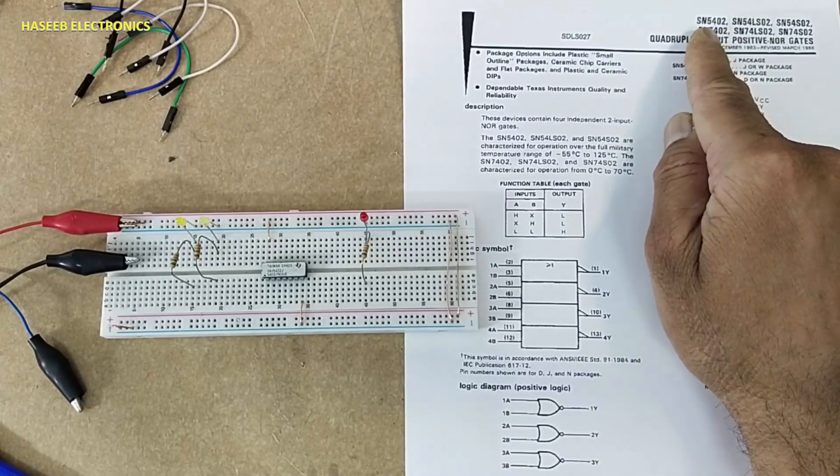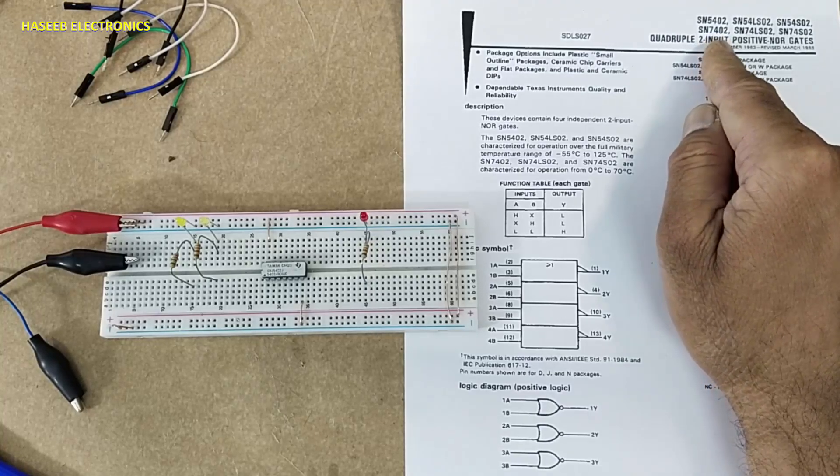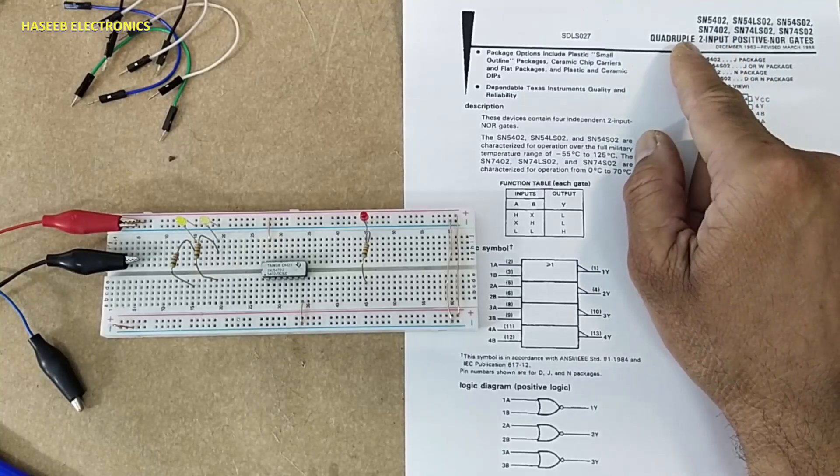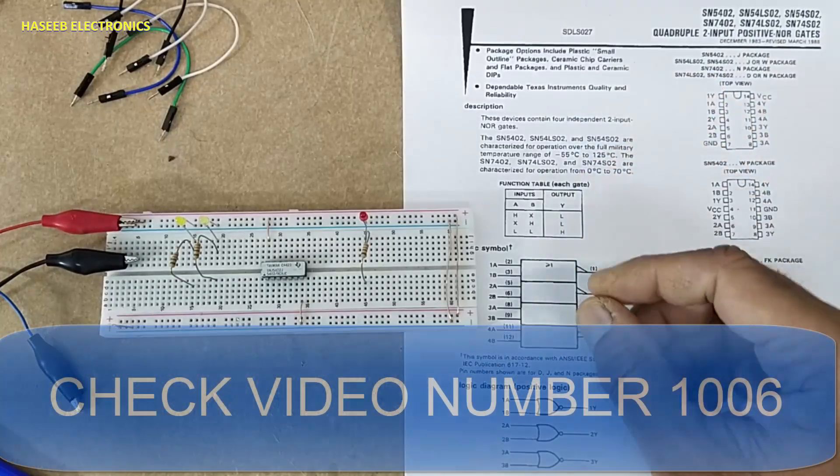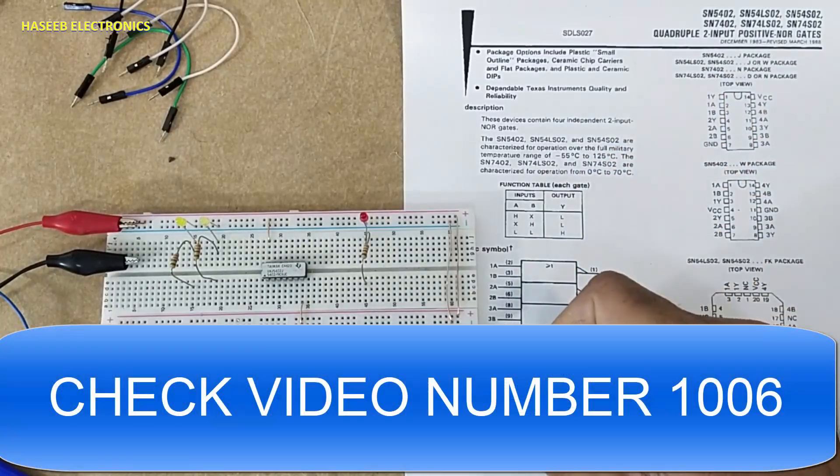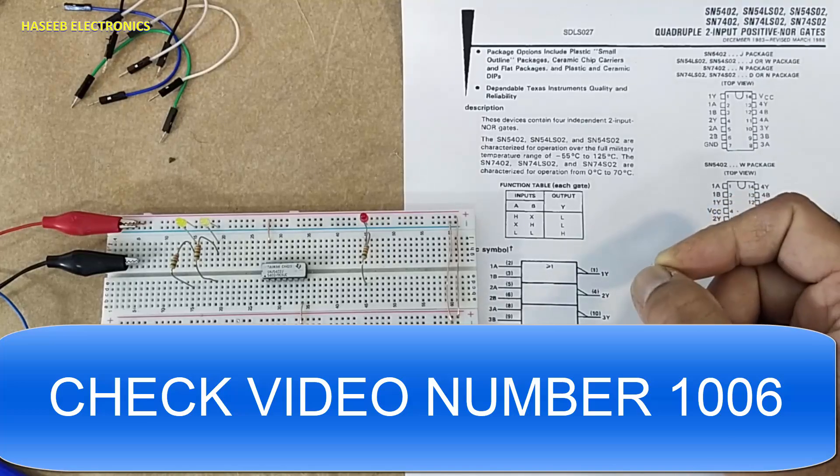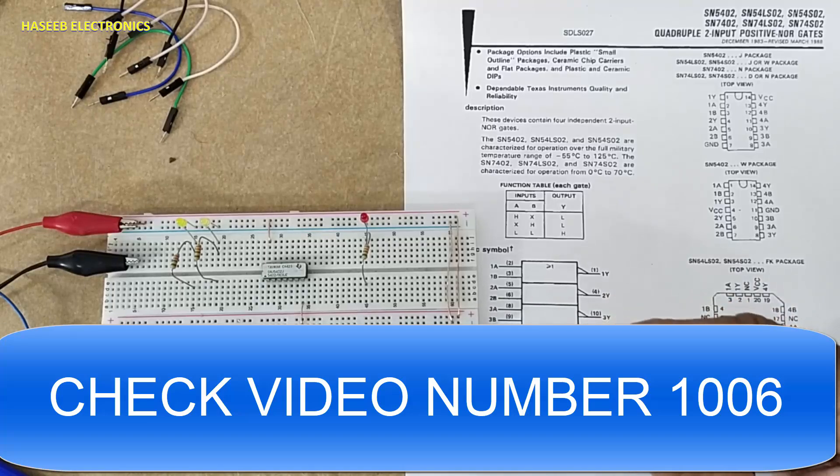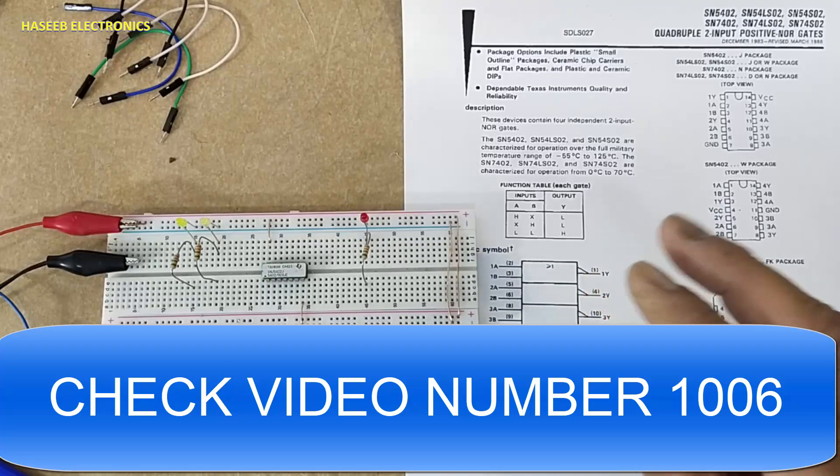The 74 series and 54 series ending in number 02 form a complete family: quadruple two-input positive NOR gate. In the last video, we discussed 7432, the OR gate. When we discuss OR gate, when all inputs are low, output is low. Anyone or all inputs are high, output will high.